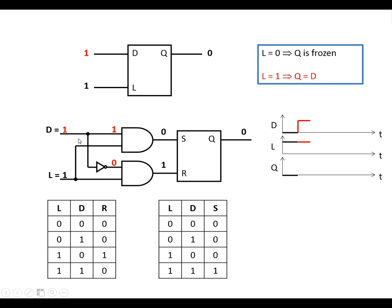We're going to make D go high. With this AND gate, we've now got a 1 and a 0 going in, so the output is 0. And we've now got a 1 and a 1 going into the other AND gate, meaning the output is going to be high. So the bistable is now going to be set, meaning that Q is high. So when D and L are both high, the output is high.